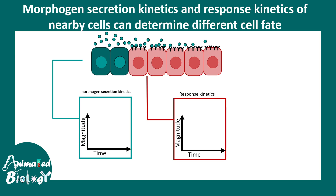Morphogen secretion kinetics can be complicated. Source cells can secrete morphogen at a steady-state level at a constant rate over time. There are other possibilities: secretion in a pulsatile manner over time, a time-dependent increase in secretion, or a time-dependent decrease. Based on these secretion kinetics the response kinetics would also be different, and together the secretion and response kinetics can shape downstream processes and lead to different cellular fates.